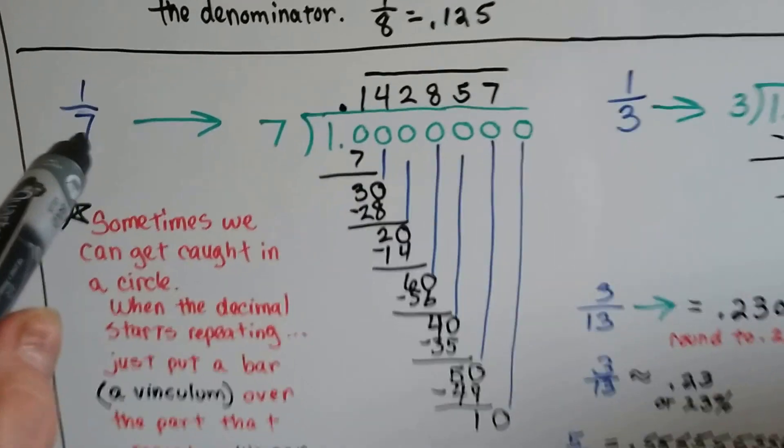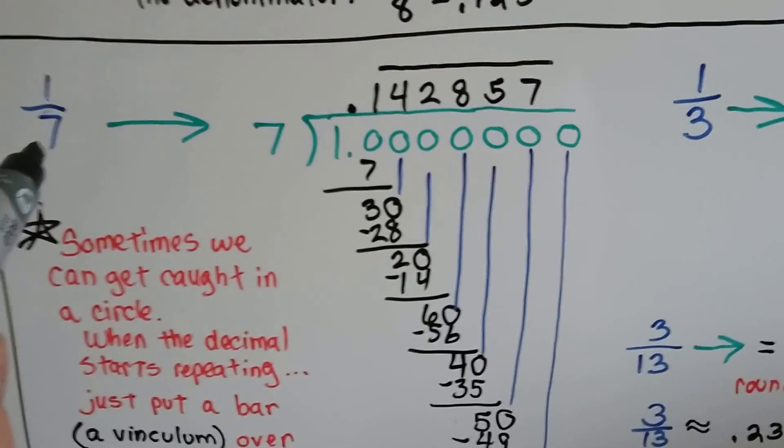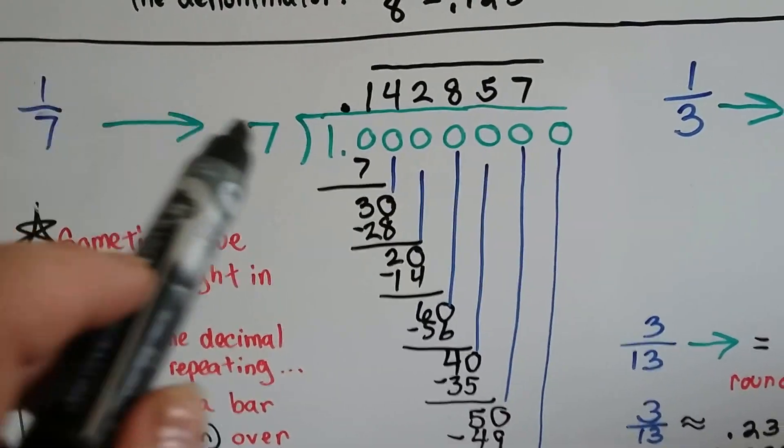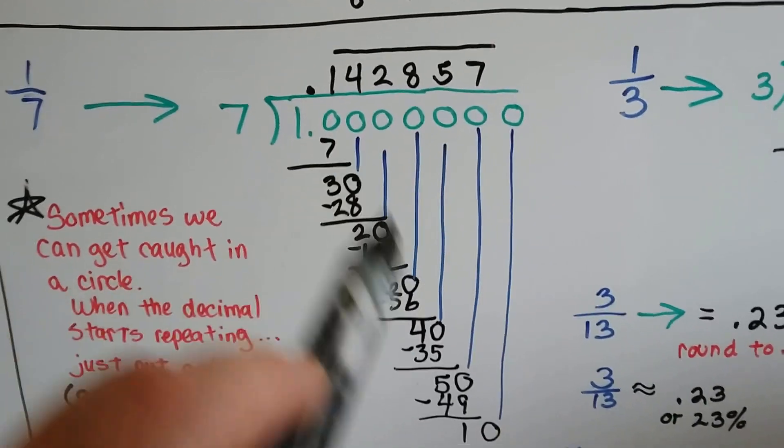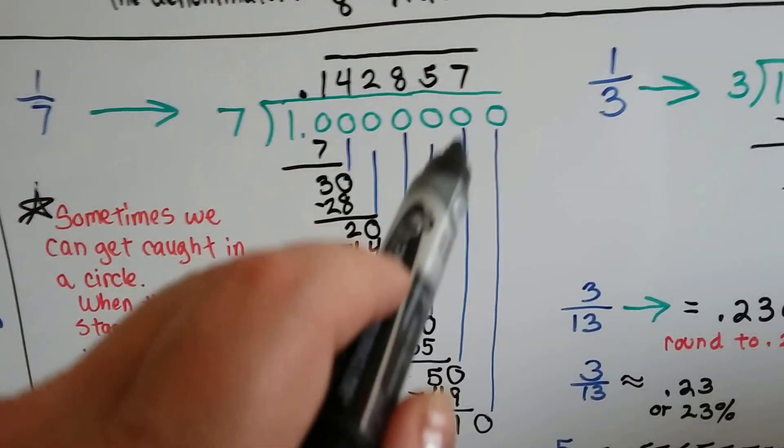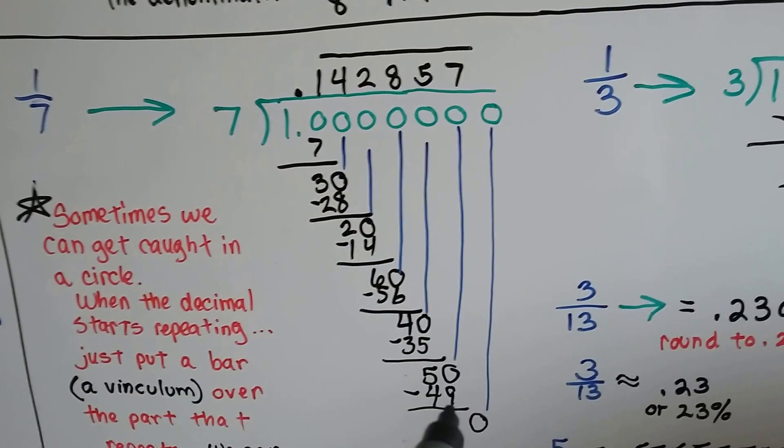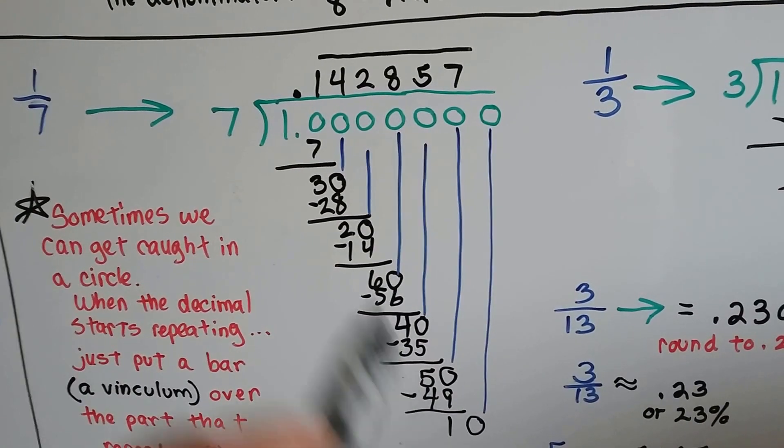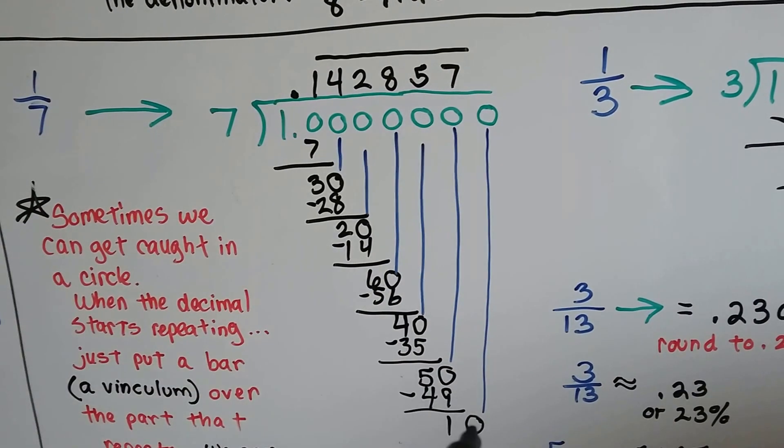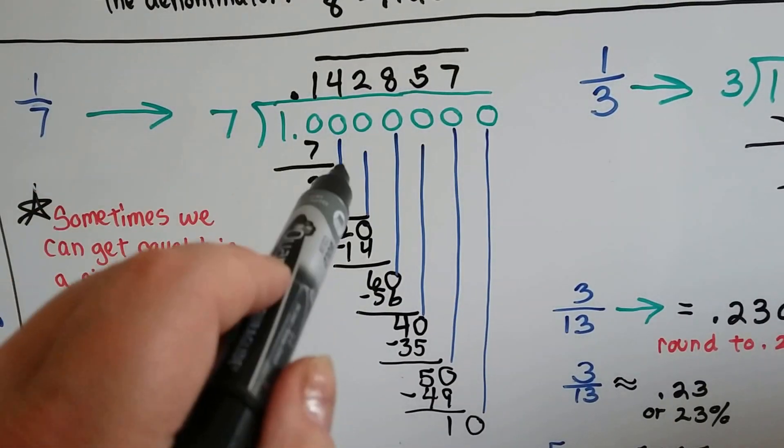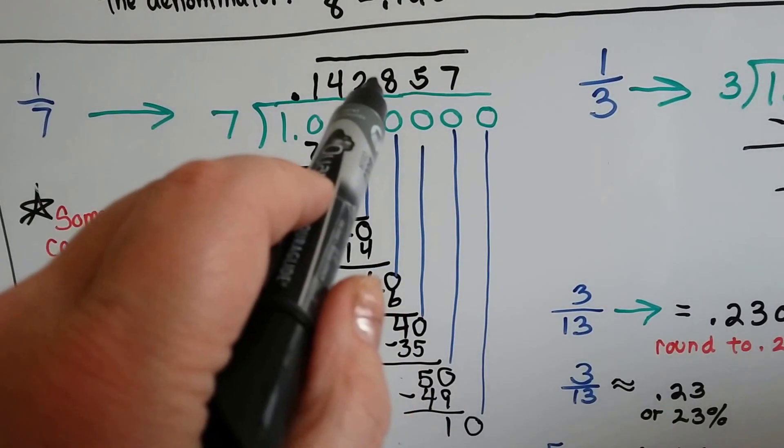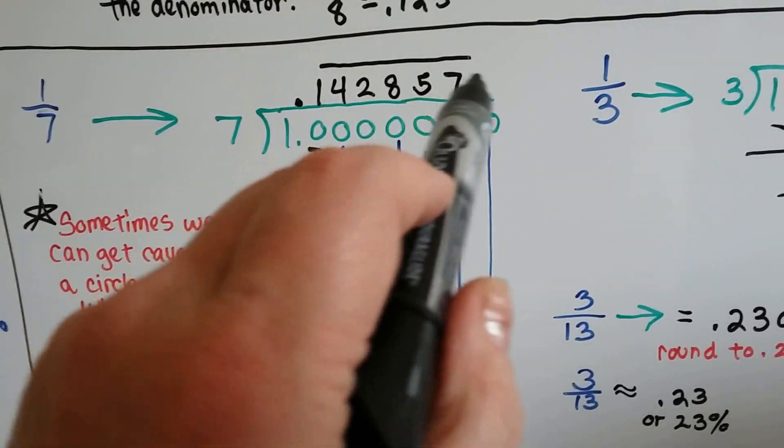Look at one-seventh. I did one-seventh, and I've had the seven as the divisor and the one as the dividend, and it kept going and going and going, and then when I finally got to this one, to the seven times seven is 49, look what happened. I got a one again, which is this one. And if I do that one, the next one's going to be a four, and if I do that four, the next one's going to be a two, and it's going to start repeating and repeating and repeating.